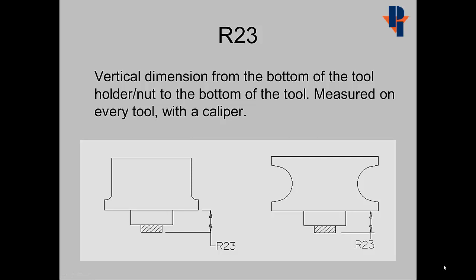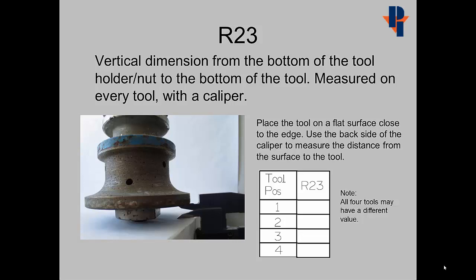R23 is a vertical dimension from the bottom of the tool holder nut to the bottom of the tool. It's measured on every tool with a caliper. Place the tool on a flat surface close to the edge. Use the back side of the caliper to measure the distance from the surface to the tool. All four tools may have a different value.